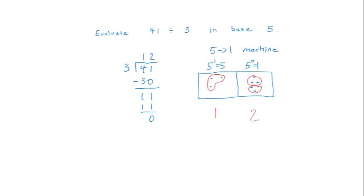So the answer to this division is 1, 2 in base 5. And both methods give us the same result, and both methods didn't have any remainder left over after doing this division.